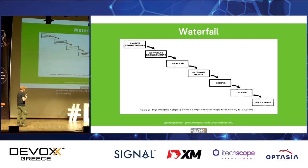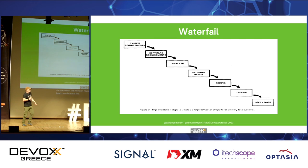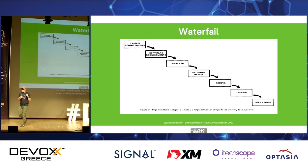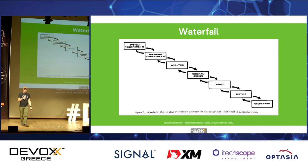There are lots of issues with this model. By the way, the reason it's called Waterfall is because in 1970, the text editor that Winston Royce had could not put seven blocks on the same line. True story. And the nice thing about this white paper is if you read on — this is figure two — there are more figures in the white paper. I never read the text, I just look at the pictures.